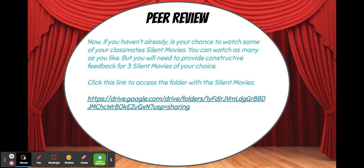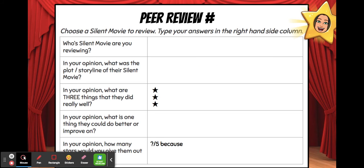Then you need to do some peer reviewing. If you haven't already, it's now your chance to watch some of your classmates' silent movies. You can watch as many as you like, but you will need to provide constructive feedback for three silent movies of your choice. Click the link here and that will take you to the folder with the silent movies in it. Then you need to fill out the table for three of the silent movies from your peers.